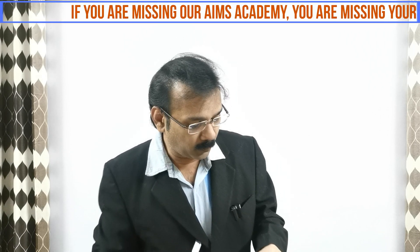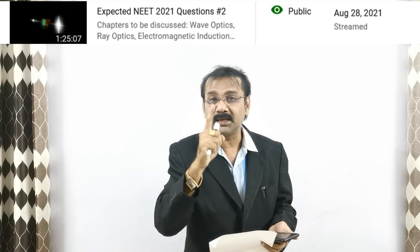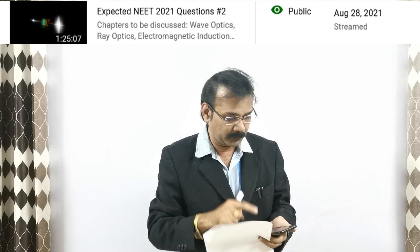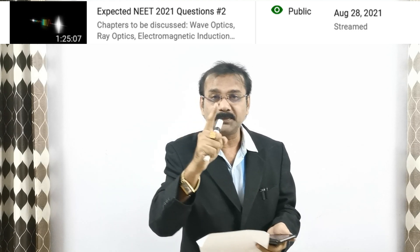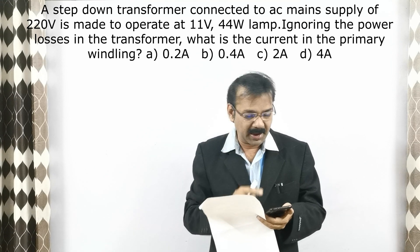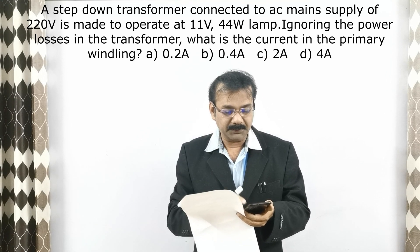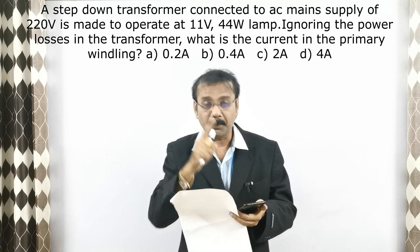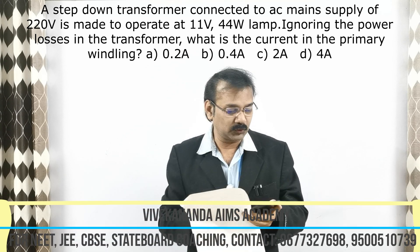Let us go for the second question. It is M set, question number 39. The model has been given in the expected NEET live session launched 15 days before. The question is: a step-down transformer connected to an AC mains supply of 220 volts is made to operate at 11 volts.